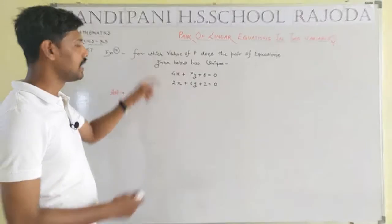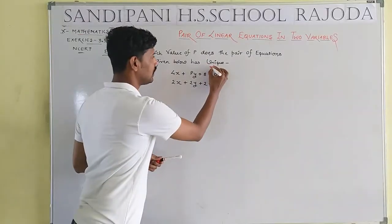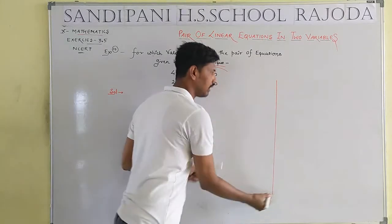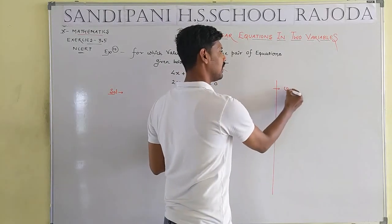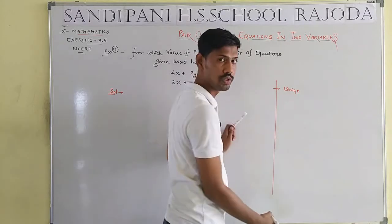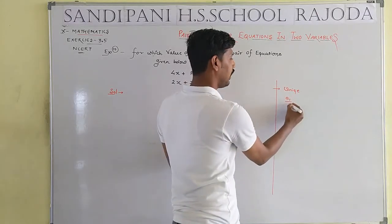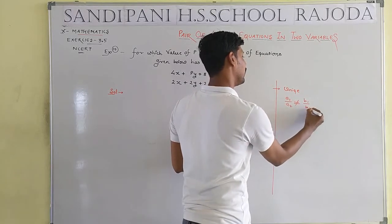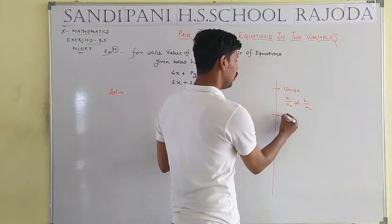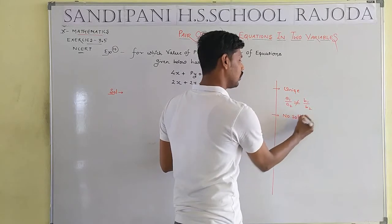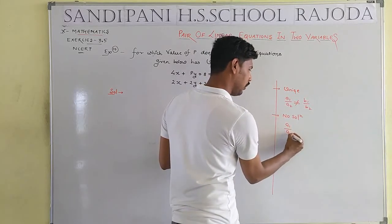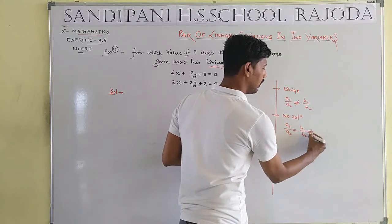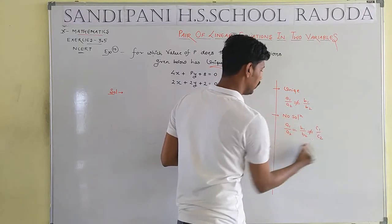How many types of solutions are there? Three types: first is the unique solution. What is the meaning of unique solution? a1 by a2 is not equal to b1 by b2. In the case of no solution, a1 by a2 equals b1 by b2, but not equal to c1 by c2.